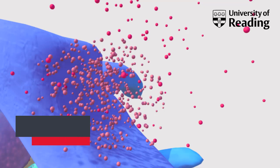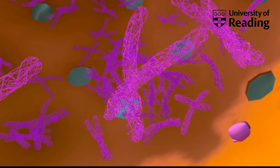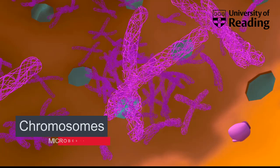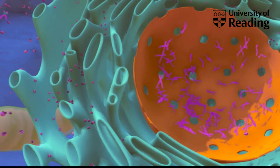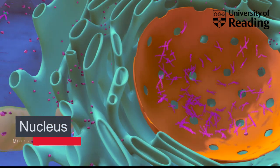Now let's take a look at some of the other structures within this amoebal cell. In eukaryotes, the genome is made of double-stranded DNA that is tightly packaged into structures called chromosomes that are enclosed within the nucleus. The nucleus has a double-layered membrane called the nuclear envelope, which separates the genome from the cytoplasm.